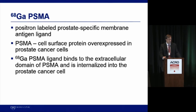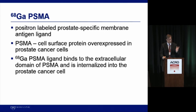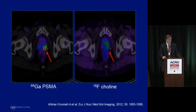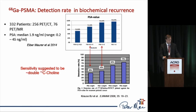Gallium-68 PSMA is being used extensively in Europe and Australia. It binds to the extracellular domain of PSMA and is internalized into the prostate cancer cell, differing from prostascint which targeted an intracellular epitope. This is being produced in Heidelberg, Germany at approximately $1,000 a dose. As of a few weeks ago, this PSMA tracer was not FDA approved in North America. Comparing F18 choline versus gallium-68 PSMA, sensitivity is suggested to be approximately double that of C11 choline, though head-to-head studies with the same patient cohorts are needed.